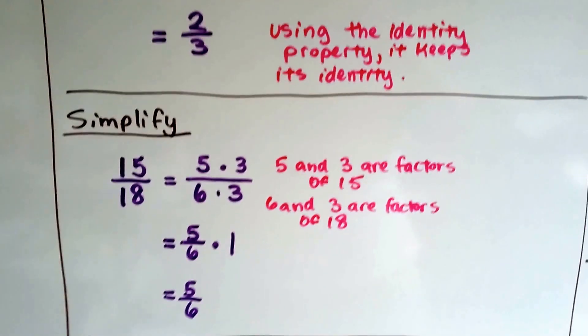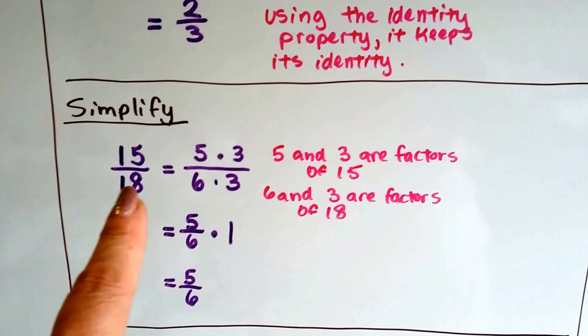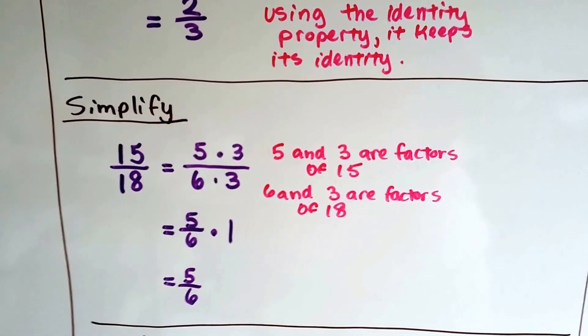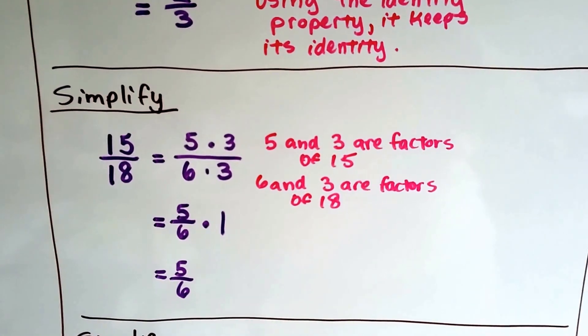Let's try it again. If we've got 15 over 18, we find the factors of 15, which is 5 times 3, and the factors of 18, which could be 6 times 3. We get rid of this 3 over 3 as a 1, and we're left with 5 sixths.